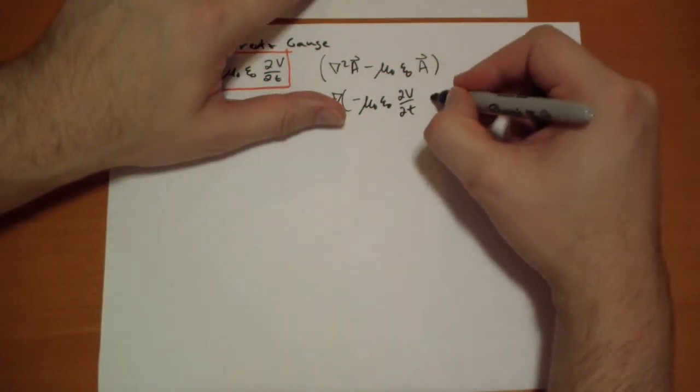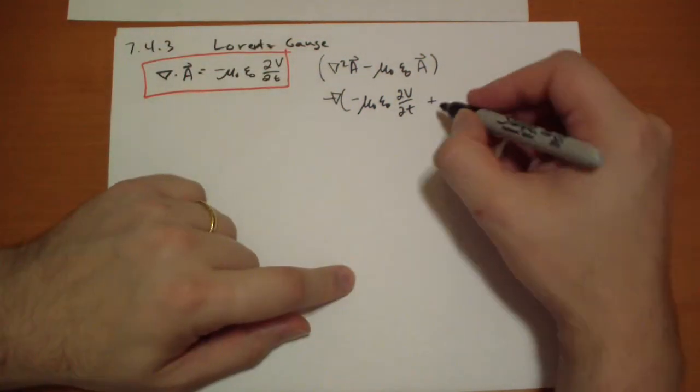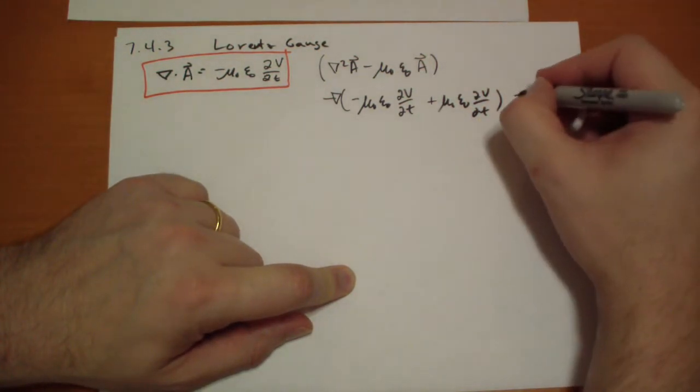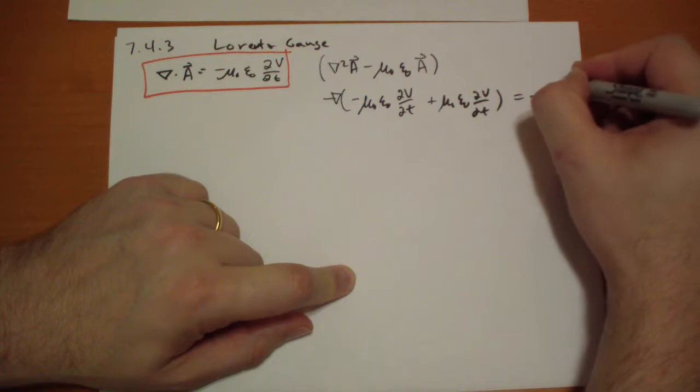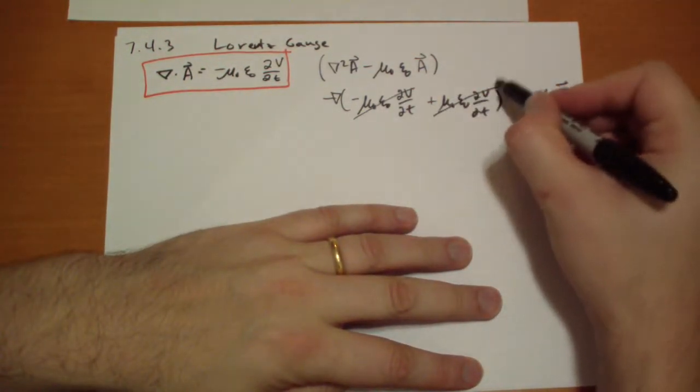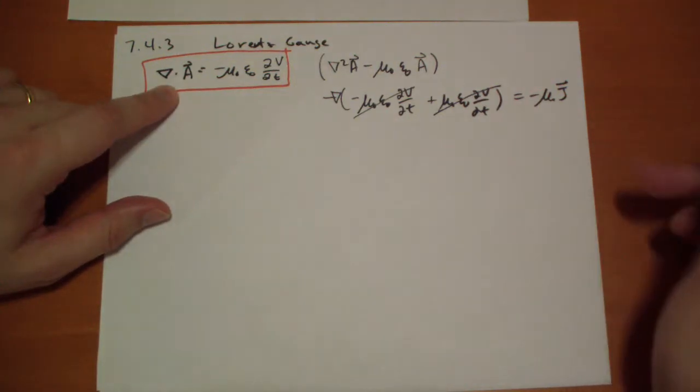And we add in dV by dt, and that's going to equal minus mu naught the current. And so these two terms cancel because we chose the divergence of A to be that.